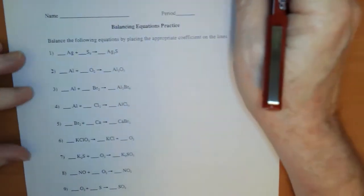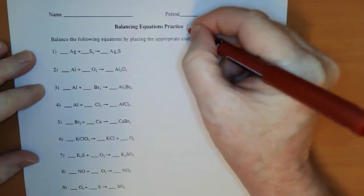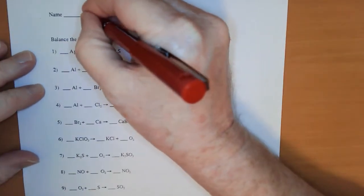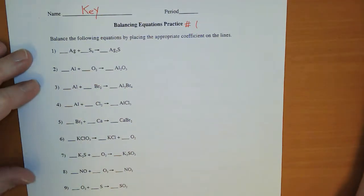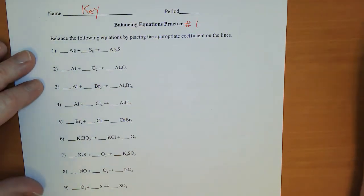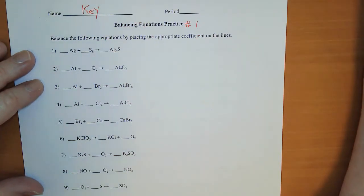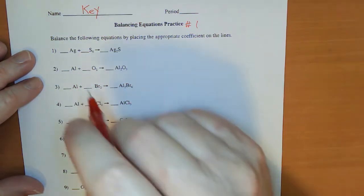Hey everyone, Morgan here. We're going to be talking about balancing equations practice number one. We'll go through and look at each of these reactions and see how to balance them. Now, there's no rule — it's just what you see. There's nothing that says do silvers before you do sulfurs or oxygens. You just go for it.